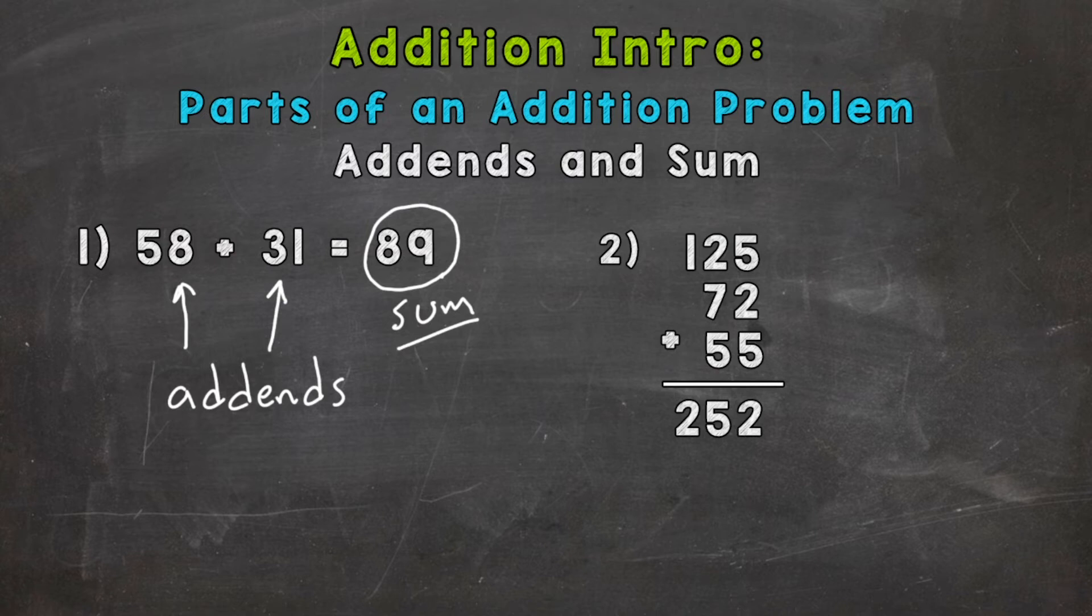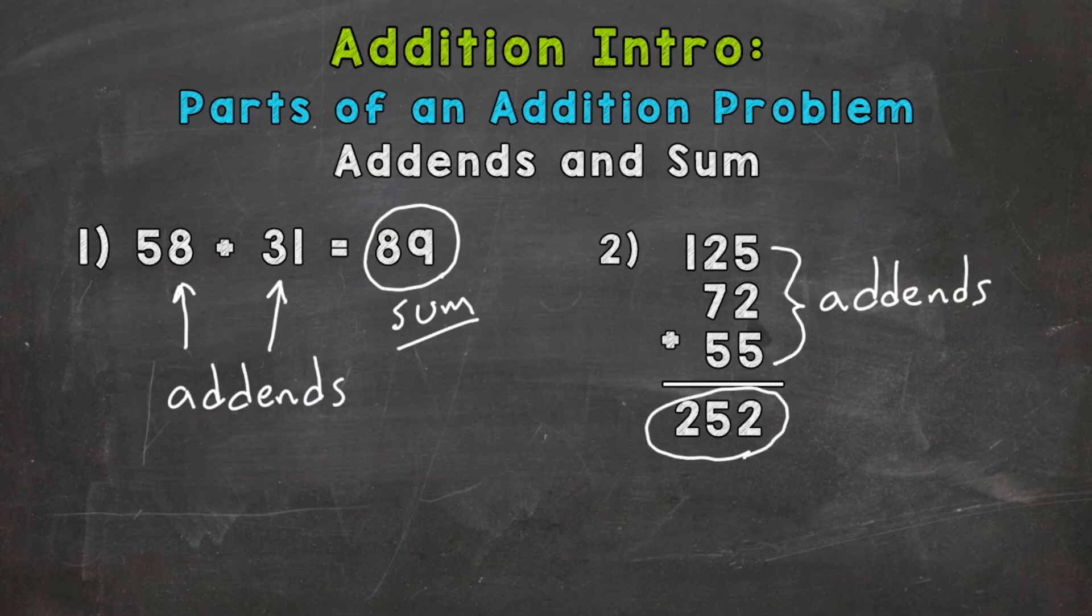So number two, here's an example where we have three numbers being added together. So we have three addends here. And again, the answer to an addition problem, so we have 252 here. After we add 125 plus 72 plus 55, this is our sum.